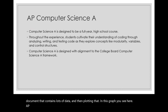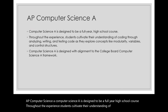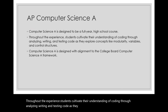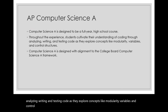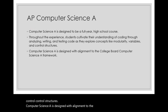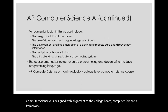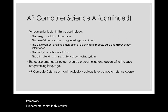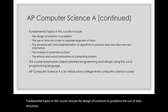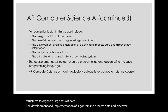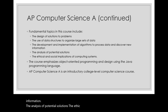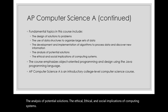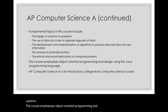AP Computer Science A is designed to be a full-year high school course. Throughout the experience, students cultivate their understanding of coding through analyzing, writing, and testing code as they explore concepts like modularity, variables, and control structures. Computer Science A is designed with alignment to the College Board Computer Science A framework. Fundamental topics include the design of solutions to problems, the use of data structures to organize large sets of data, the development and implementation of algorithms to process data and discover new information, the analysis of potential solutions, and the ethical and social implications of computing systems. The course emphasizes object-oriented programming and design using the Java programming language. AP Computer Science A is an introductory college-level computer science course.